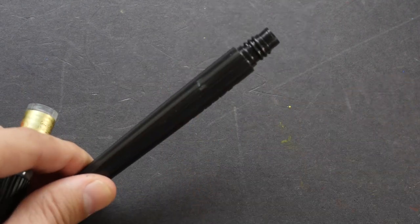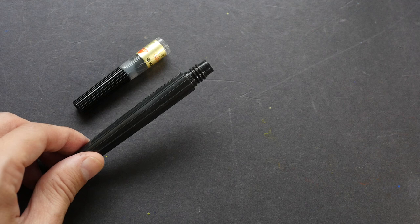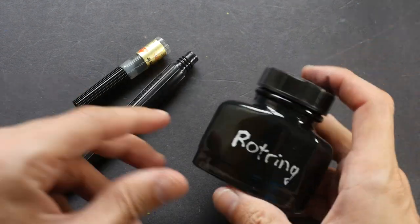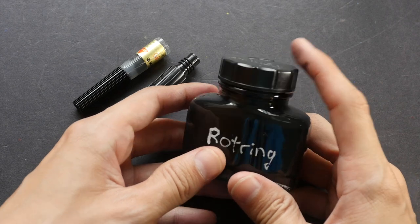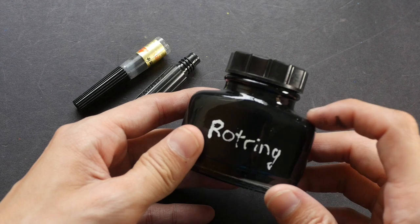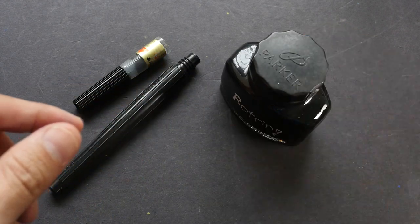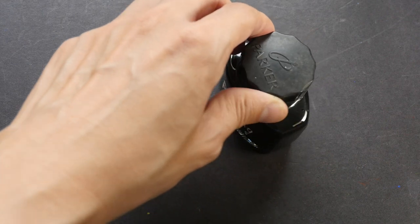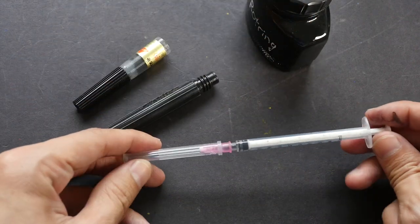The tools you need are, of course, the Pentel color brush pen. I will be using Rotring ink today. I have already poured some into this glass bottle so that it's easier for me to get the ink out. I like Rotring because it's waterproof and dries quickly, so I can use it with watercolor. You'll also need a needle.